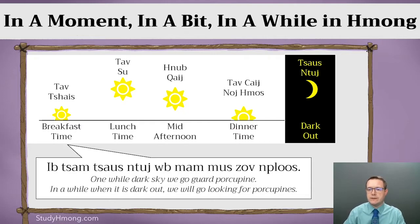Looking at the sentence below, we have the Hmong sentence on top, a literal word-for-word translation in the middle, and a meaning-for-meaning translation at the bottom. The Hmong sentence says: Yǐ jǎo zhǎo nǒu, ū mǎo mu zhā mblong — and the meaning is: 'In a while, when it's dark out, we will go looking for porcupines.'